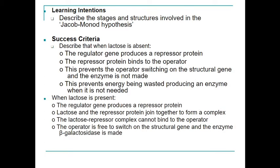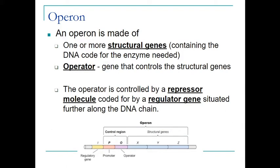I'm going to look at the beta-galactosidase enzyme here. The first thing we'll look at is something called an operon. An operon is made up of structural genes which contain the DNA code for the enzyme that is needed. It also contains the operator and a regulator gene that produces a repressor molecule.